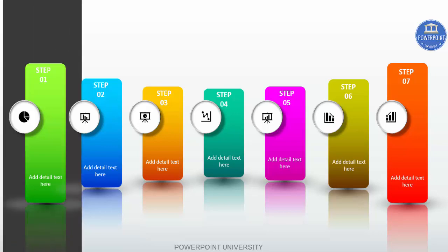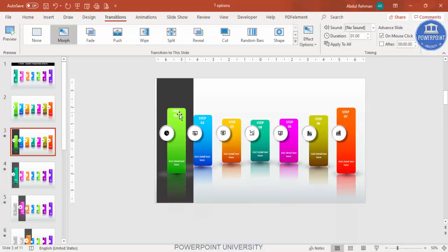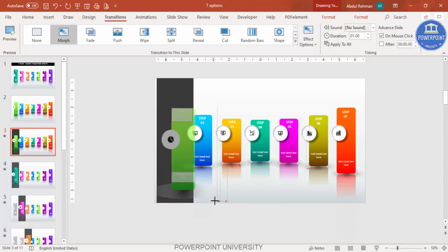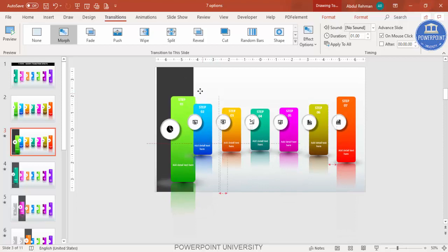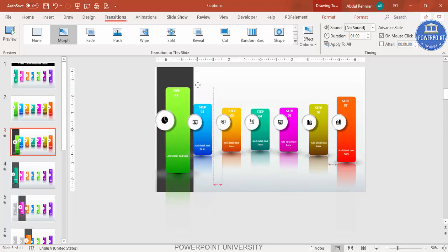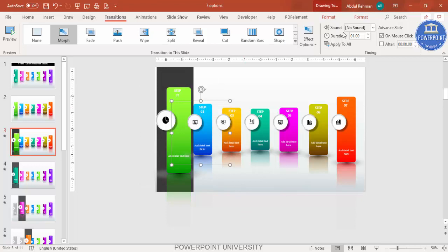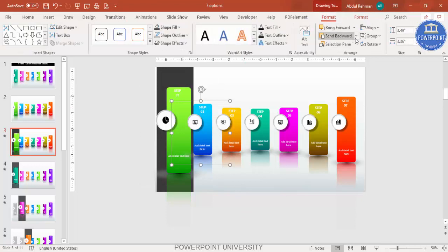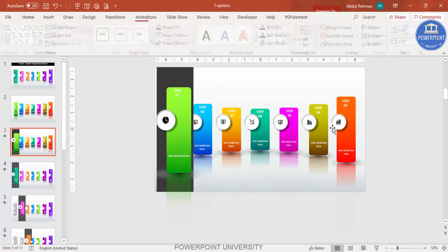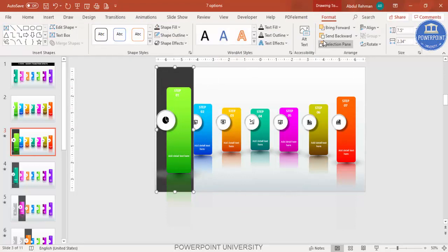On the duplicate slide, bring the gray rectangle inside to cover step one. Doing a slide show, when you click you can see the morph animation. You can increase the speed by reducing the duration to around 1 second. Hold Shift and increase the size of step one so it appears enlarged and in focus.